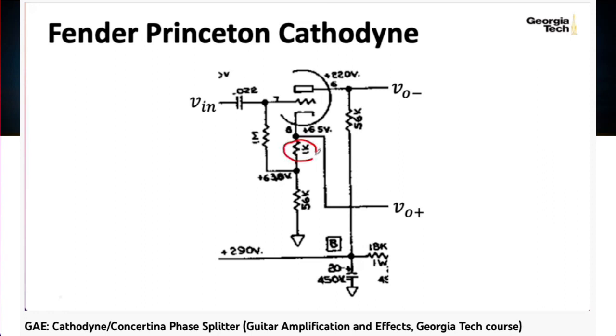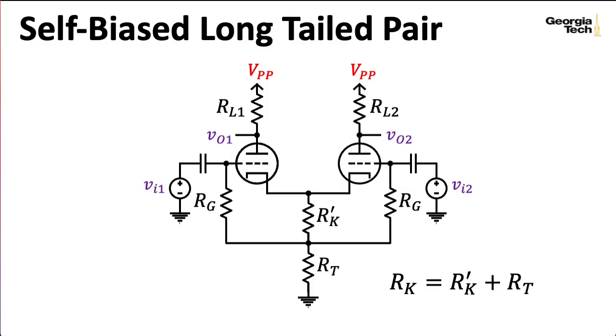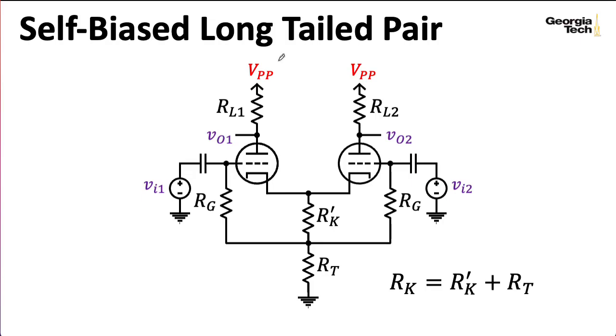In previous lectures, we've looked at the cathodyne phase splitter, which gave you original and inverted outputs, but could not provide any gain. The long-tailed pair is a phase splitter that can also provide gain. The long-tailed pair is the most complicated circuit we're going to study in detail this semester. Later in the class, we'll take a look at the fuzz phase, which is also very complicated, but I'm mostly going to hand wave about it. You'll notice that it looks like a self-biased AC-coupled cathodyne that's been mirror-imaged.